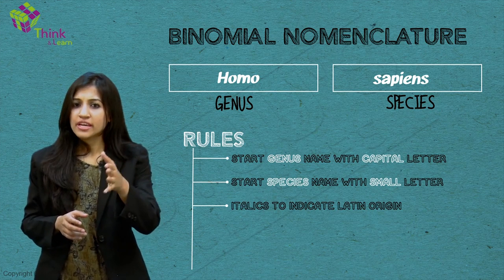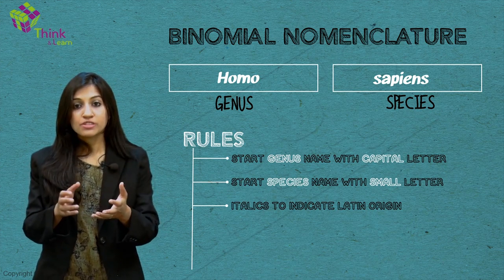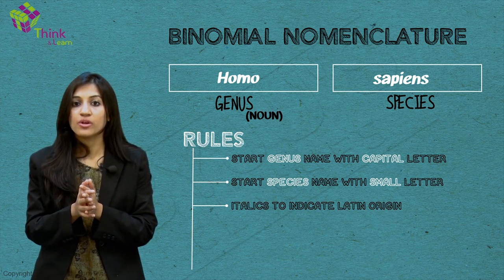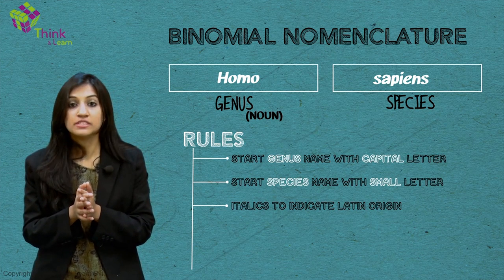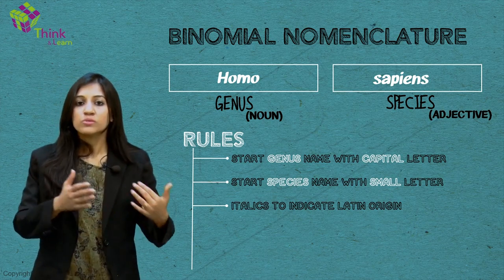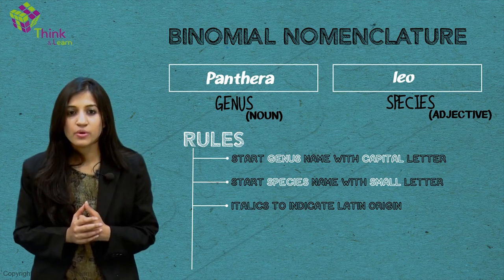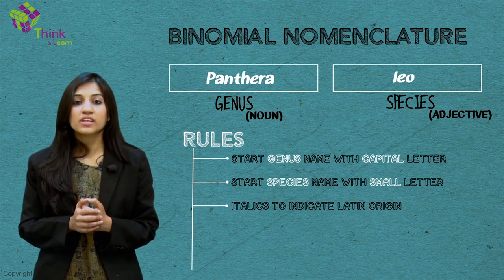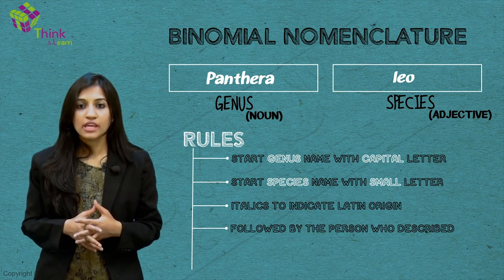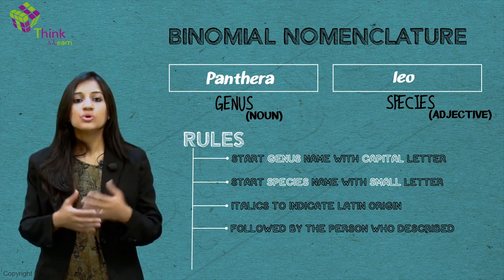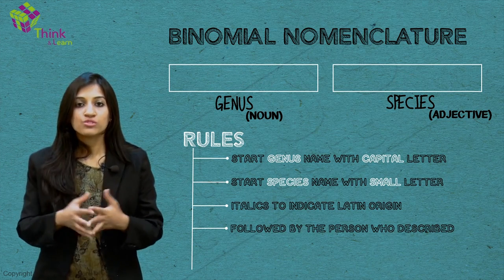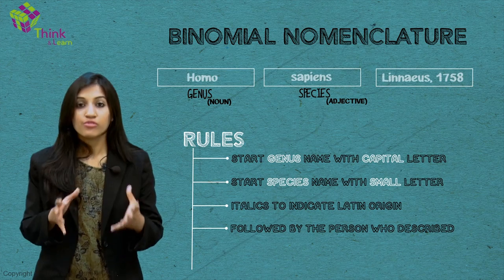If you really get into the small details, you will observe that the first name, which is the genus, is usually a noun, whereas the second name, the species name, is an adjective — like 'sapiens' in Homo sapiens, or 'leo' in Panthera leo. The scientific name of the organism is generally followed by the name of the person, or the author, who first described the species. Linnaeus authored Homo sapiens in 1758.